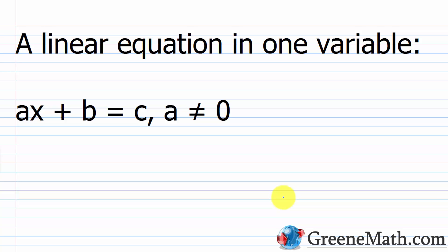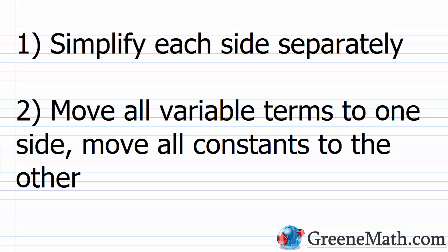So any equation of the form ax plus b equals c, where a does not equal zero. The method starts with step one: we want to simplify each side separately. This is just where we combine any like terms, clear any parentheses we might have — basically we get things as simple as we can.